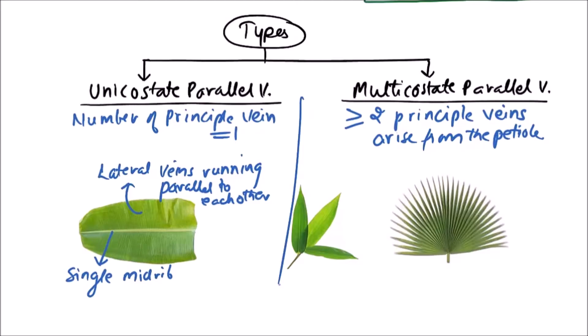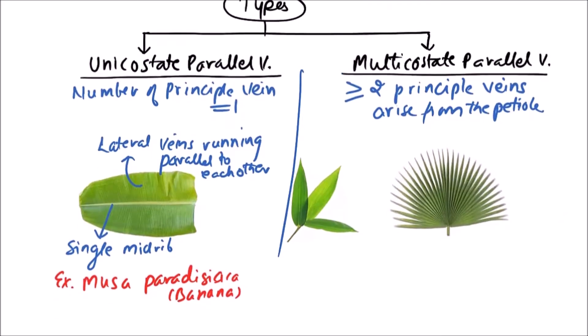This is unicostate parallel venation and the examples include the Musa paradisiaca that is banana, and canna can also be taken as an example. Banana and canna are examples of unicostate parallel venation.